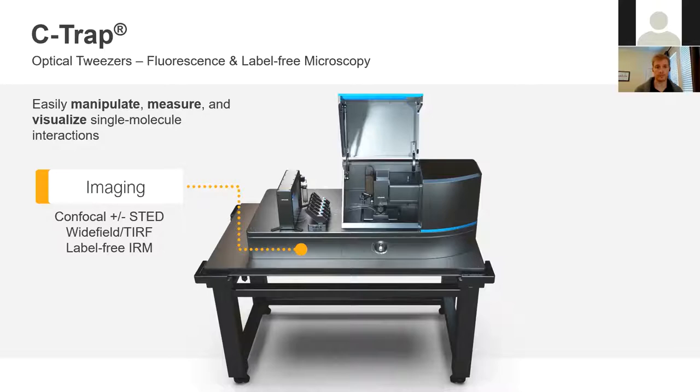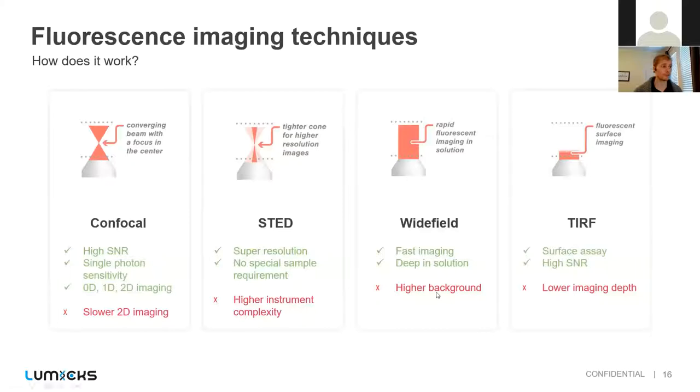So with this, you can have different setups. One is the confocal. So confocal is great, because you can have high signal to noise ratio. We've designed ours to have single photon sensitivity, so you can detect individual molecules. And then you can also do things like point scans in 1D, line scans in 1D, or 2D images. The downside here is with confocal, you're scanning a piezo over the sample so it can take longer.